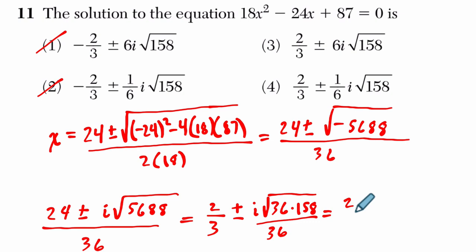We haven't divided that out yet. But this is going to work out nicely. We get 2 thirds plus or minus i. Now, you take the square root of each of these factors, but only the first one is a perfect square. So I'm going to leave 158 alone. And the square root of 36 is just 6 times the square root of 158 over 36. And here you can see that 6 over 36 is 1 sixth, and choice 4 is the answer.